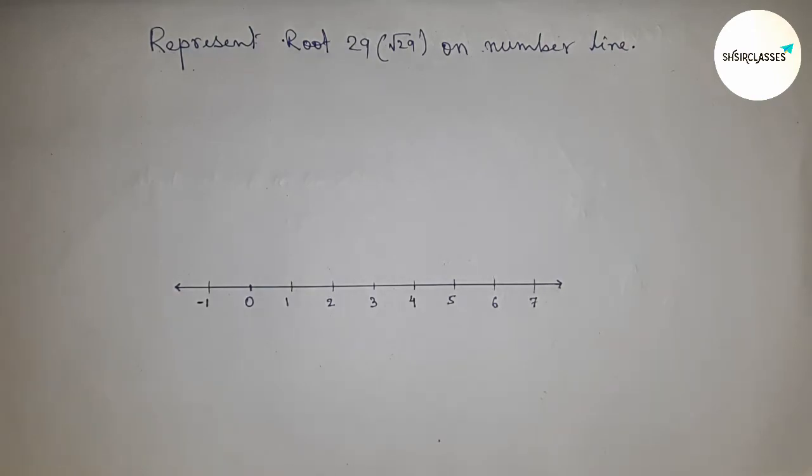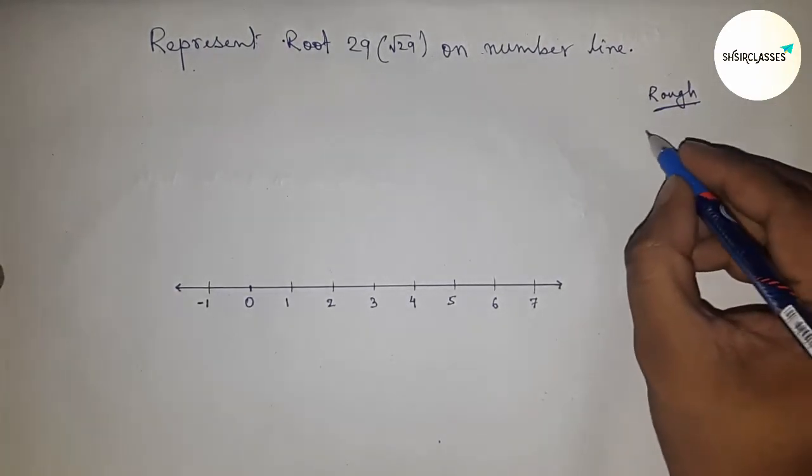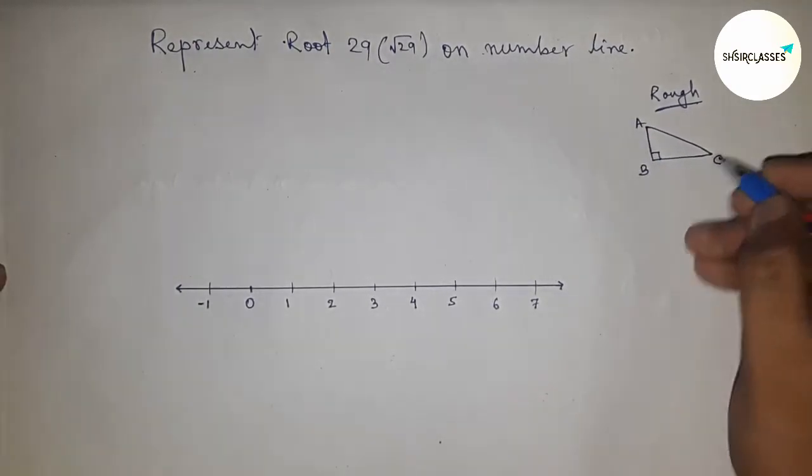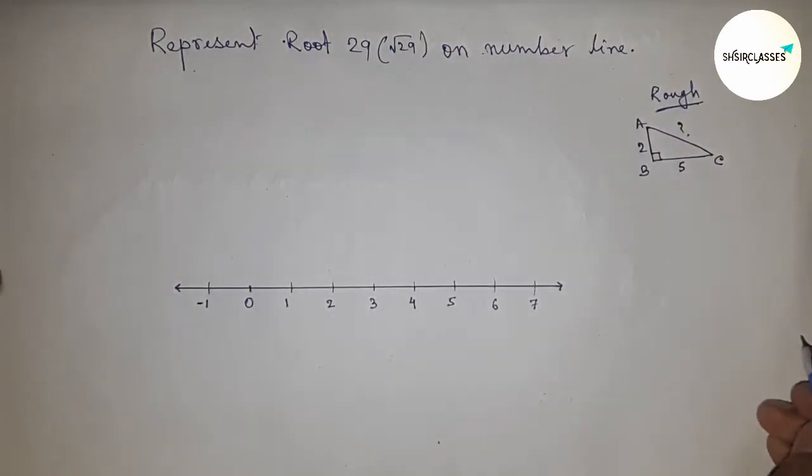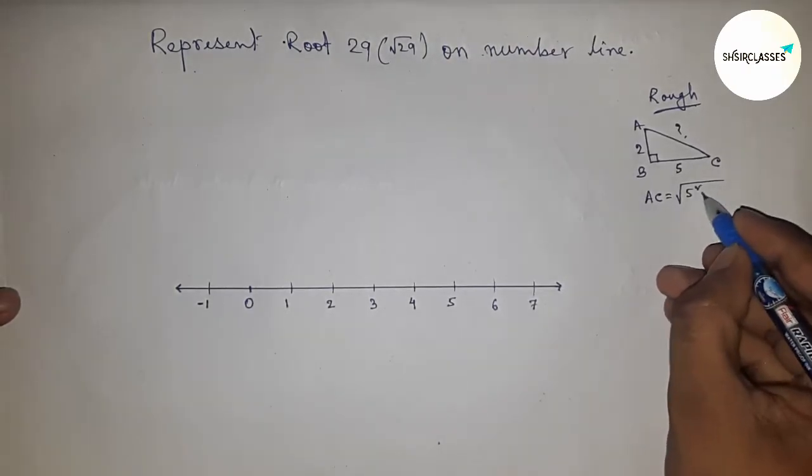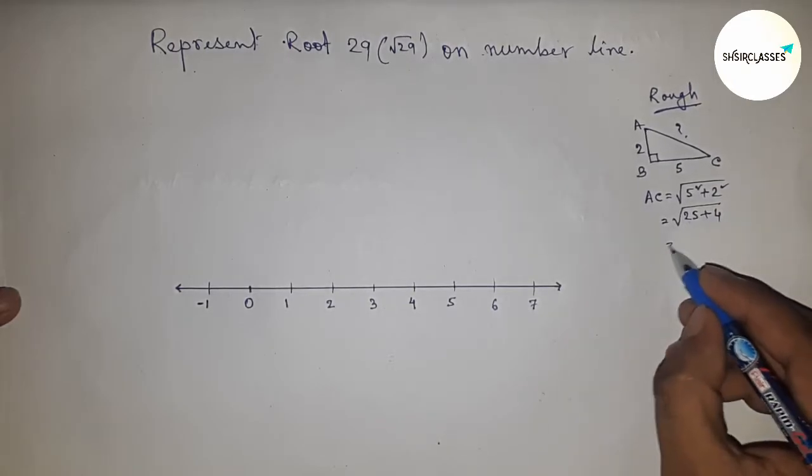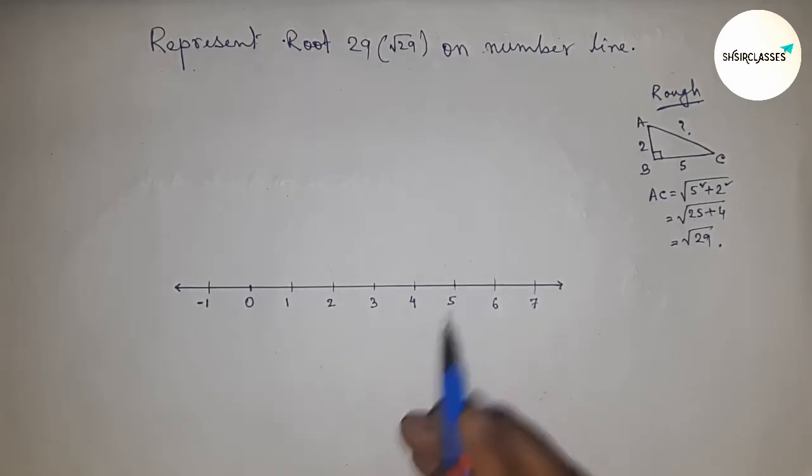Now roughly discussing the concept of root 29. If there is a right angle triangle ABC with base equal to 5 and height equal to 2, then what is the hypotenuse? By applying Pythagorean theorem, hypotenuse equals base squared plus height squared. Calculating this: 5 squared plus 2 squared equals 29, so root 29. Applying this on 5.